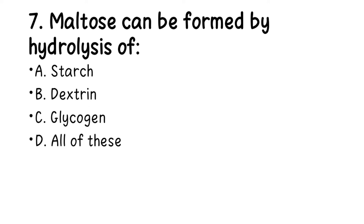Number 7. Maltose can be formed by hydrolysis of: A. Starch, B. Dextrin, C. Glycogen, D. All of these. When they say hydrolysis, it means breaking down a larger molecule into a smaller molecule through the action of water. The right answer here is starch.